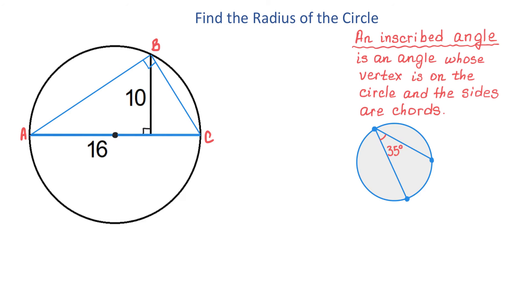An inscribed angle is an angle whose vertex is on the circle, and the sides are chords. Here we have an example of an inscribed angle that measures 35 degrees, with the vertex on the circle, and the two sides are the two chords of this circle.